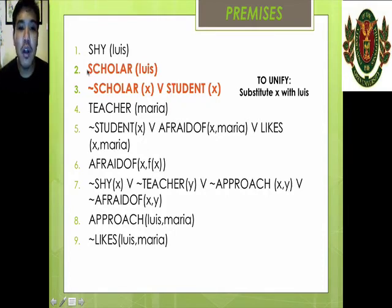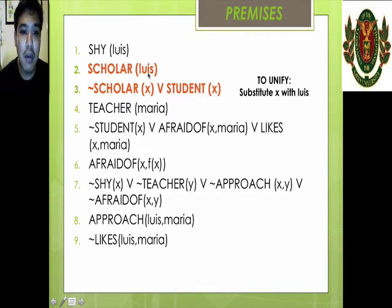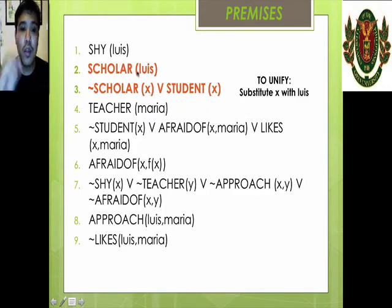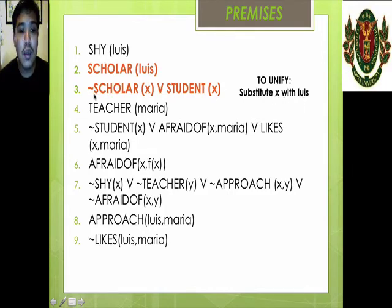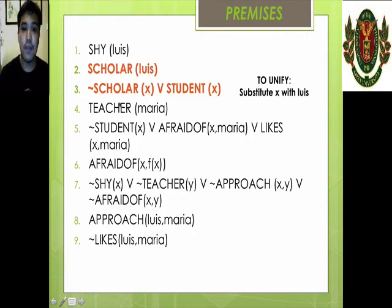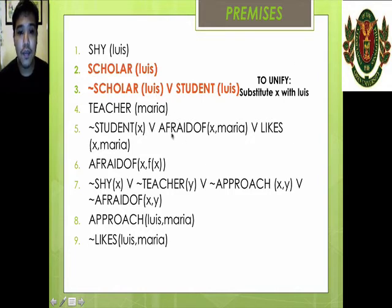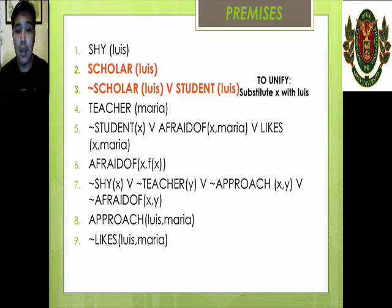For example, we have: scholar(Luis) and not scholar(X) or student(X). As you can see, we can cancel out these two. However, this one has X and that one has Luis. Using unification, we substitute X with Luis. This will now be: Luis is not a scholar or Luis is a student. Now we can cancel them out, and this is the final form.